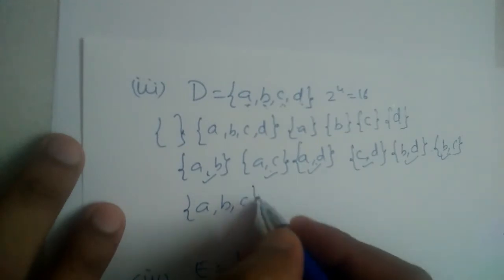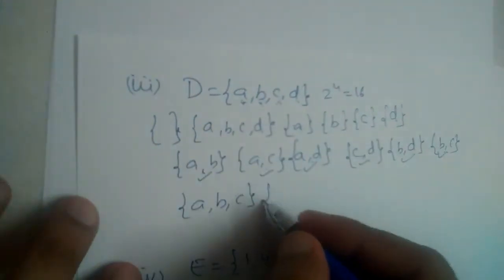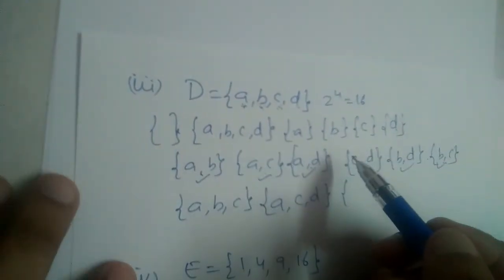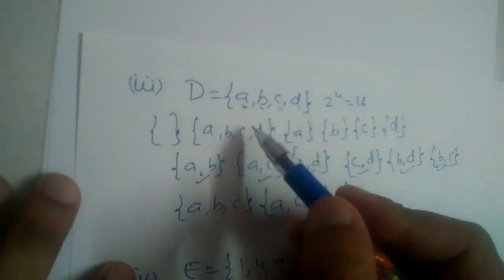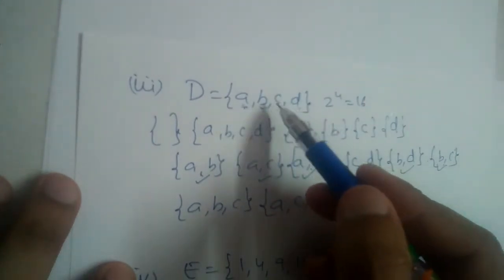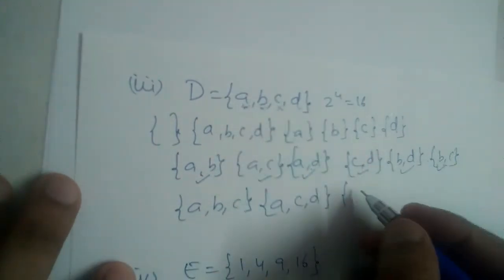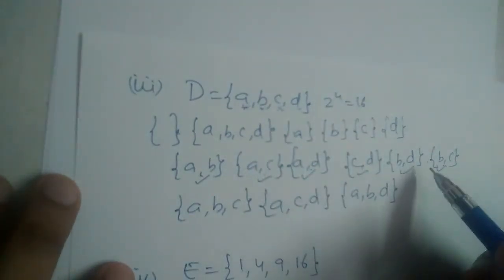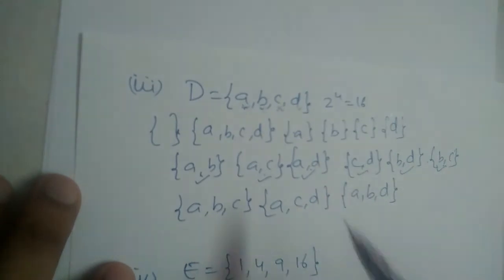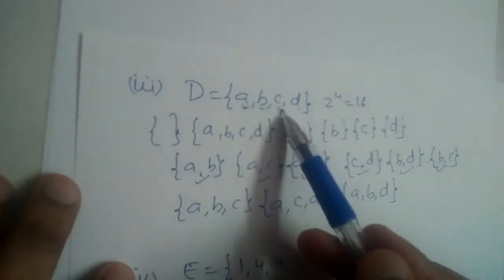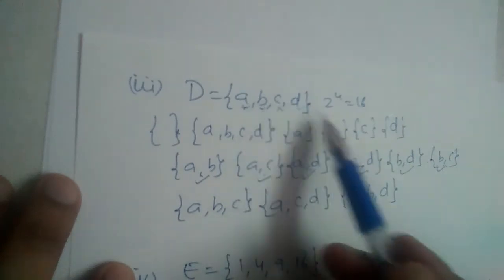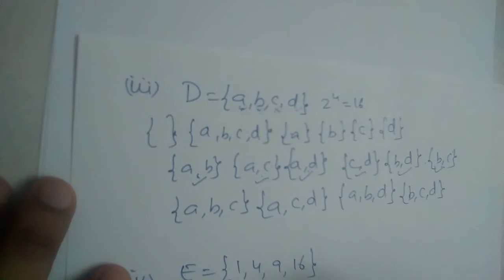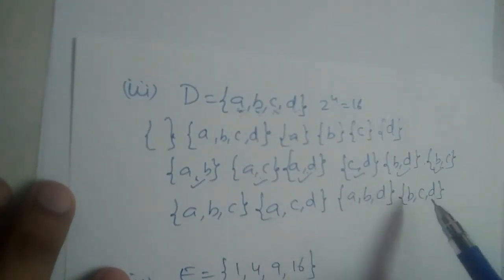Now the three-element subsets of D: {a, b, c}, {a, c, d}, {a, b, d}, and {b, c, d}. That gives us 12 plus 4 equals 16. Total 16 subsets for D = {a, b, c, d}, since 2 power 4 is equal to 16.